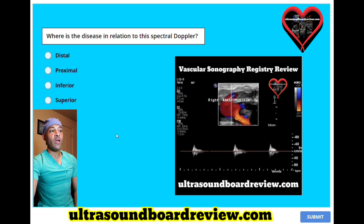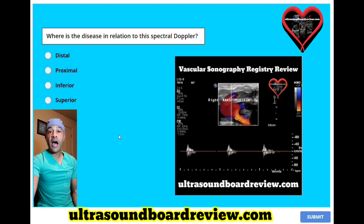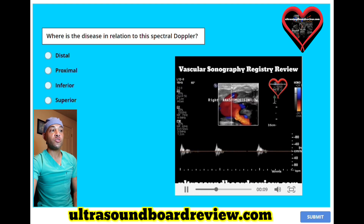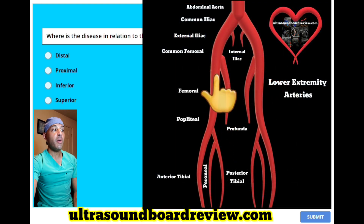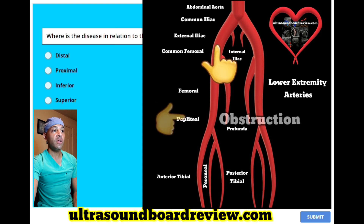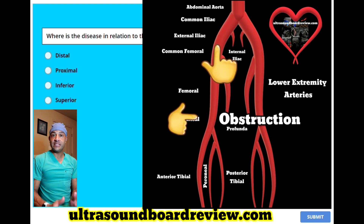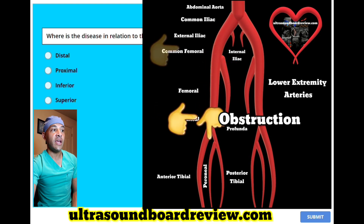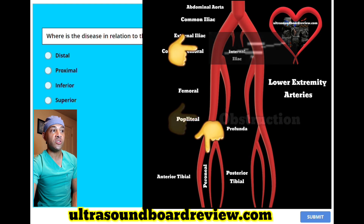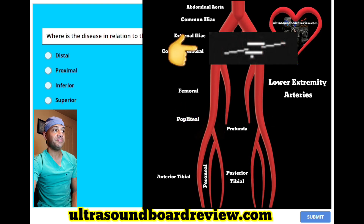This Doppler waveform is monophasic with a low-velocity, high-resistance flow, and this spectral Doppler was taken in an area proximal to the disease, meaning that the disease is distal to the area where we used our sample gate.